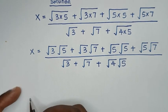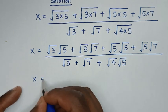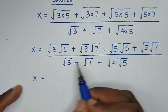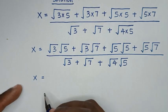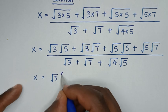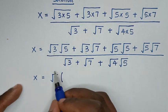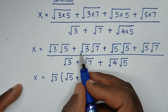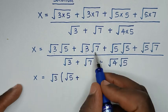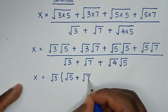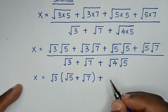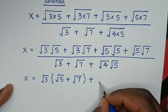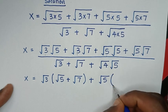Then in the next step, we take √5 out of the bracket in the numerator. The denominator has √3 + √7 + √4 (which is 2), then times √5.